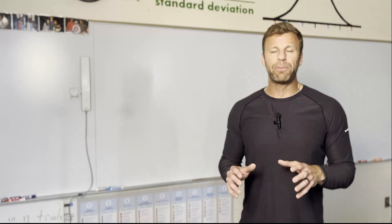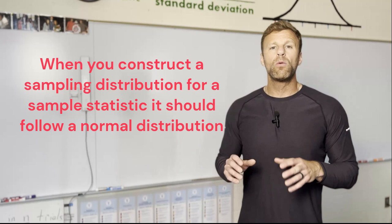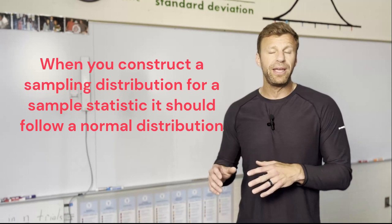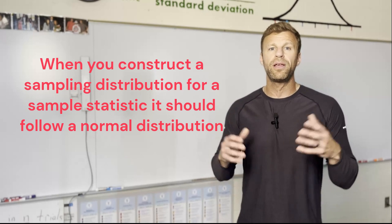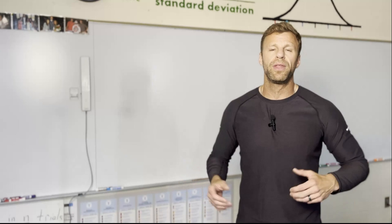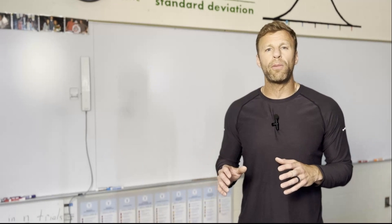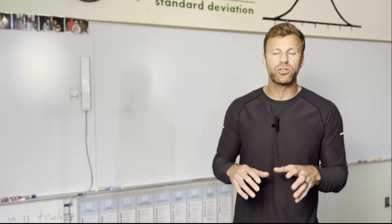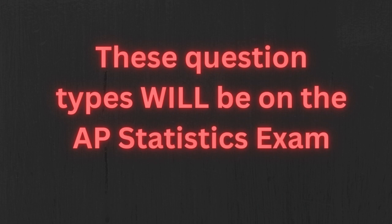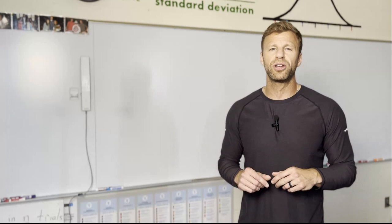It also works with sampling distributions. Sampling distributions can be normal as long as all the conditions are met — whether it's a sampling distribution for sample means or sample proportions. The normal model can be used if you confirm it follows a normal distribution, and that should be happening in most cases. So let's dive into a couple of problems where we're going to use the normal model to find probability, proportions, percentages — all that fun stuff. I promise you will see problems of very similar concepts on the AP exam.